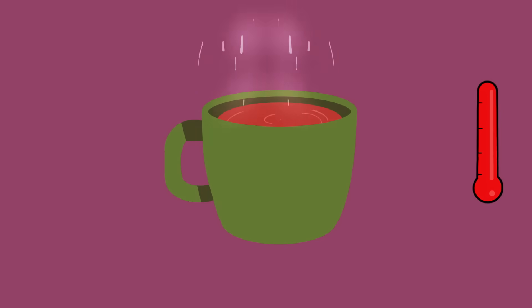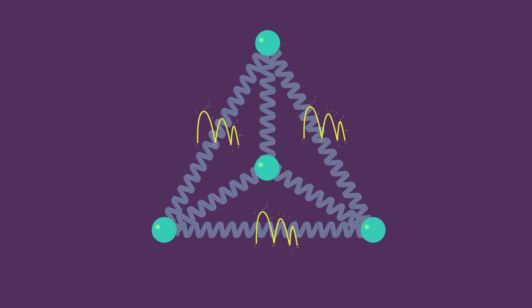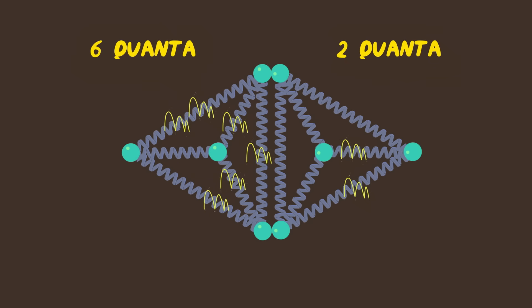To see why entropy is useful for explaining spontaneous processes, like hot objects cooling down, we need to look at a dynamic system where the energy moves. In reality, energy doesn't stay put. It continuously moves between neighboring bonds. As the energy moves, the energy configuration can change.